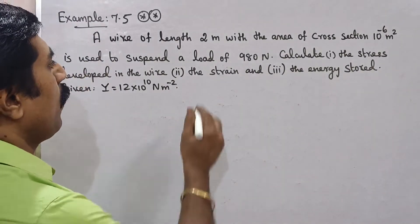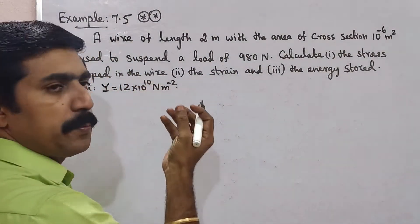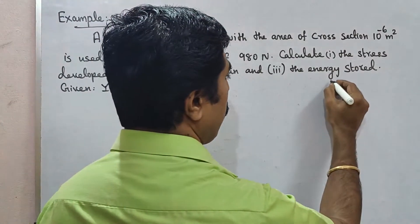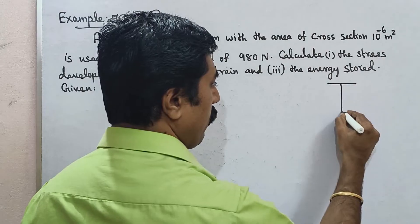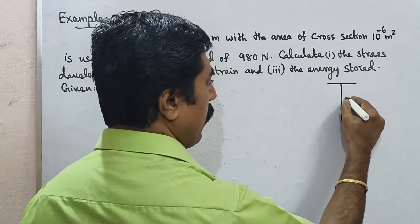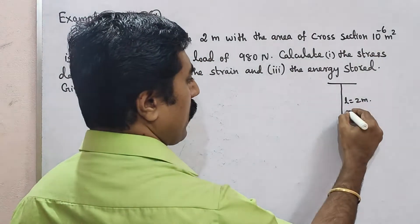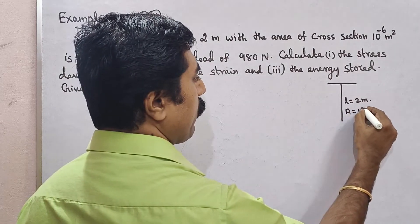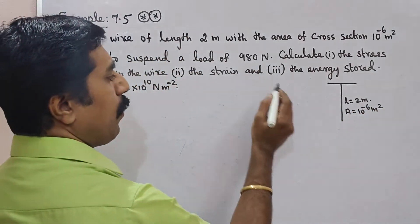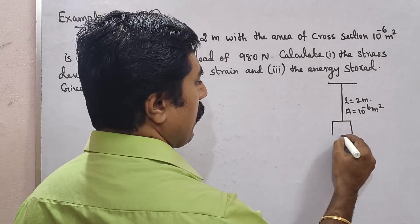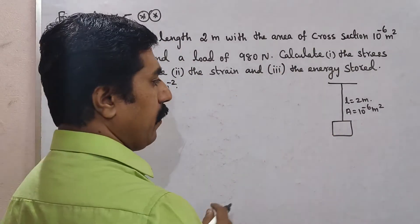It's very simple. The wire length L is equal to 2 meters, area of cross section A is equal to 10 power minus 6 meter square. The wire is suspended from the ceiling. Load applied is 980 newton.